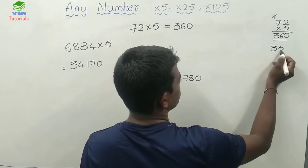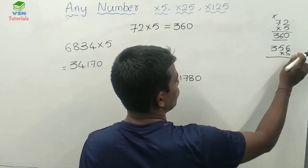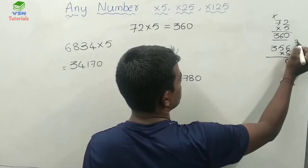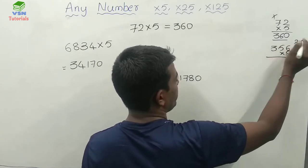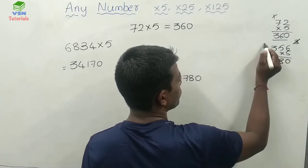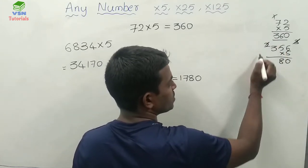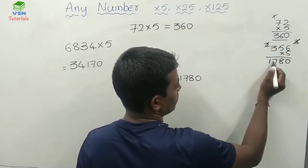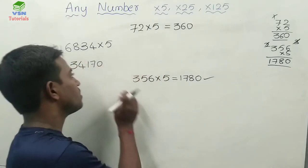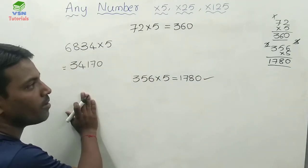And 356 into 5: 5 sixes are 30, carry 3. 5 fives are 25, 25 plus 3 is 28 — write 8, carry 2. 5 threes are 15, 15 plus 2 is 17. So the answer 1780 is right. If you do it like this, you will get the same answer.